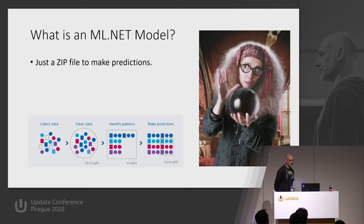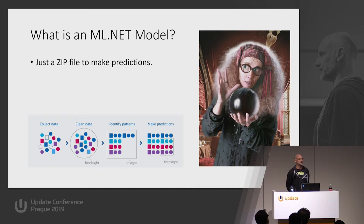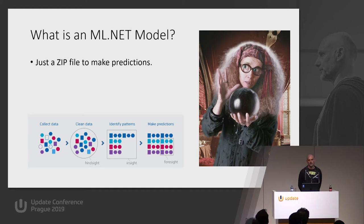In machine learning, you're going to collect data, clean it up, and train a model to identify patterns. But that's an offline activity — something you do in console applications, Windows services, and so on. The model produced is, if it's ML.NET, saved as a zip file. And in your WPF, UWP, or ASP.NET applications, you load that zip file in order to ask it questions.